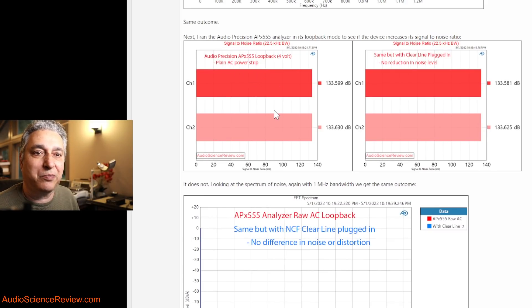So I set up my Audio Precision analyzer to basically test itself. I told it to output four volts and measure four volts, and I got a signal-to-noise ratio of almost 134 dB. This is about 25 dB better than threshold of hearing, and that's what I expect from a high performance audio analyzer. And this is with raw AC. I then plugged in the Clear Line into it and naturally it made absolutely no difference.